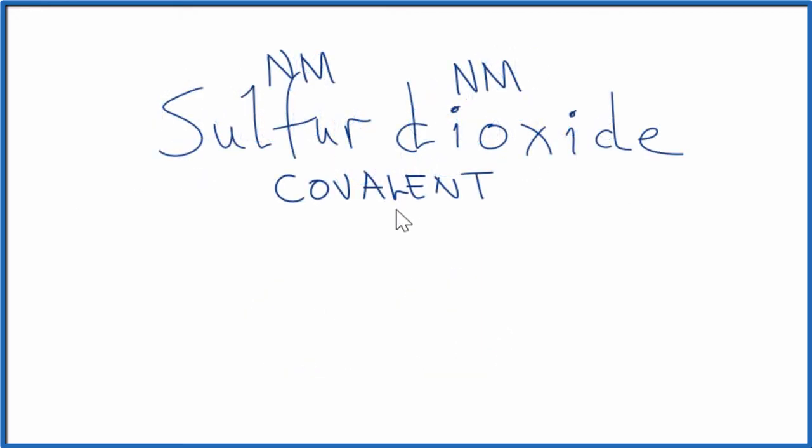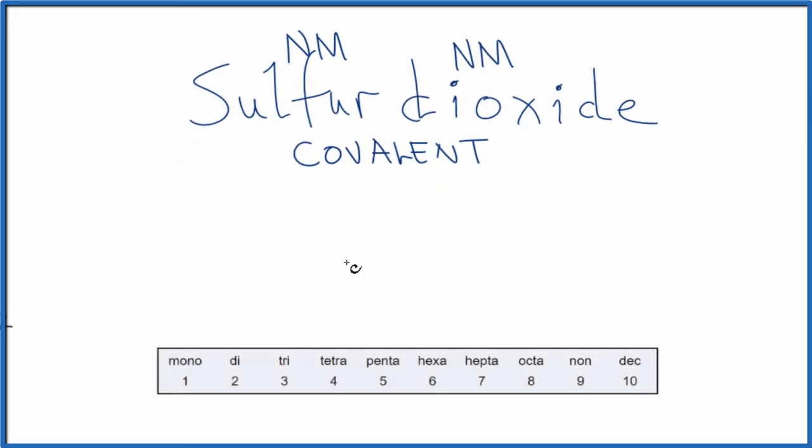For sulfur dioxide, we have the two nonmetals. All we need to do is use prefixes when we write the formula. So we write S for sulfur and O for oxygen. And it says sulfur dioxide.